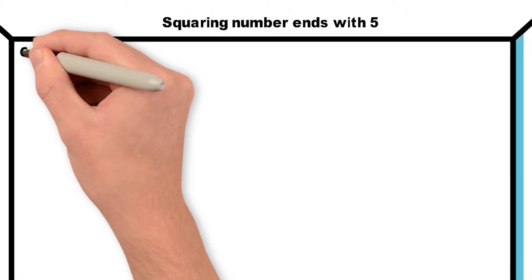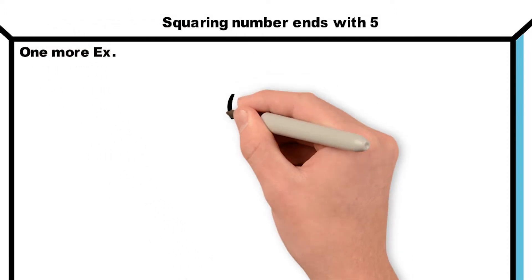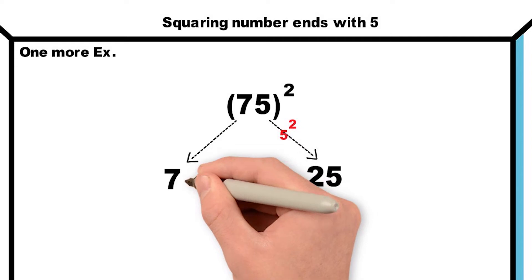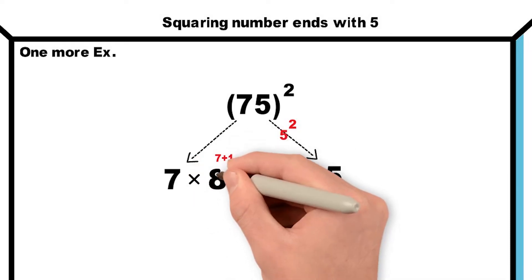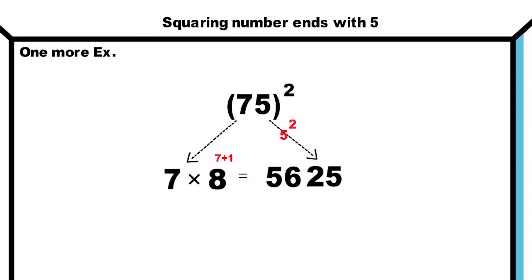Let's take one more example: 75 whole square. Square of unit place digit means 5 square, that is 25. This is the last digits of our answer. After that, we will multiply 7 with its next number, that is 8. 7 into 8 is 56. So 5625 is our required answer.